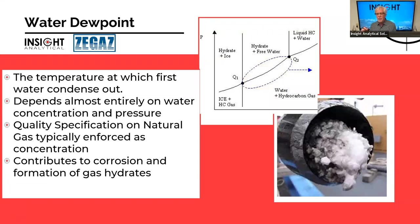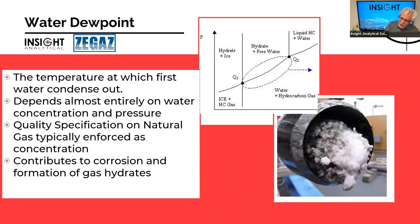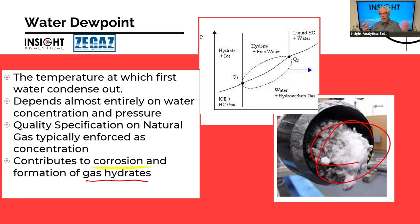Water dew point is the temperature at which water will first condense out, and it depends almost entirely on water concentration and pressure. In a natural gas application, water and hydrocarbons are immiscible, so changes in hydrocarbon composition don't really affect the water dew point. We want to know it well because of risks related to corrosion and to the formation of gas hydrates. Hydrates, or clathrates, kind of look like snow or ice.